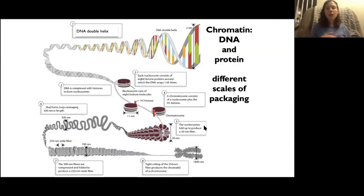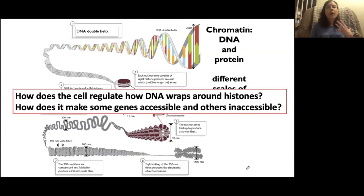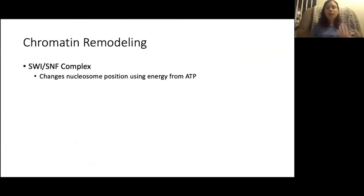In the previous video, Dr. Monfred introduced the fact that DNA wraps around proteins called histones and that this affects gene accessibility and therefore expression. Because if the gene is not in a position that the transcription machinery can see and read, that gene won't get expressed. So that leaves us to wonder how the cell regulates DNA wrapping around histones, known as chromatin — a process called chromatin remodeling.